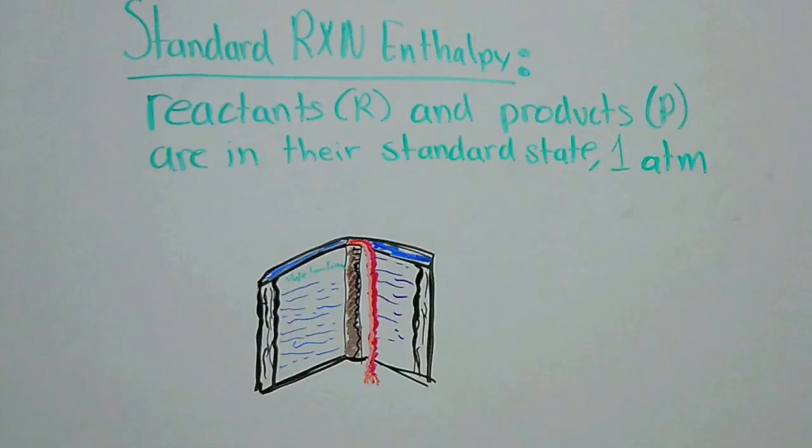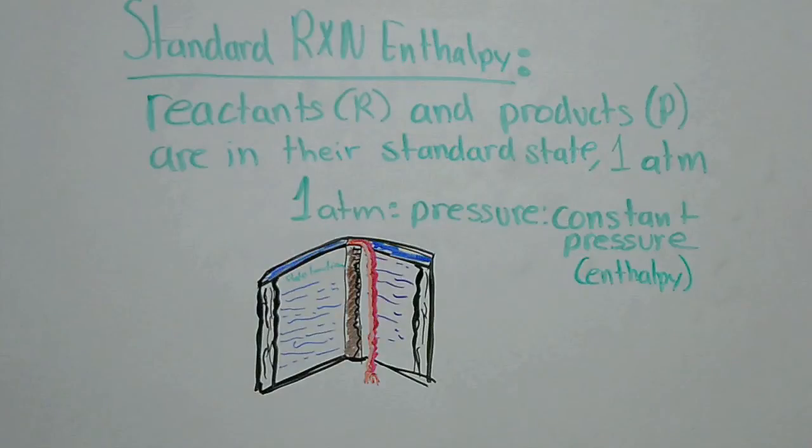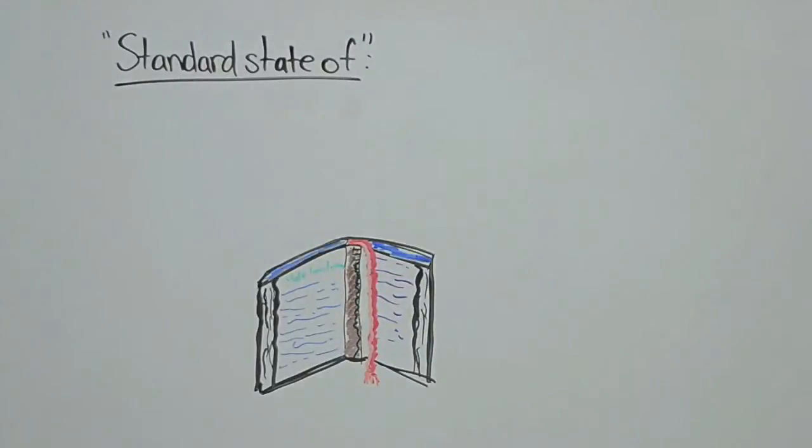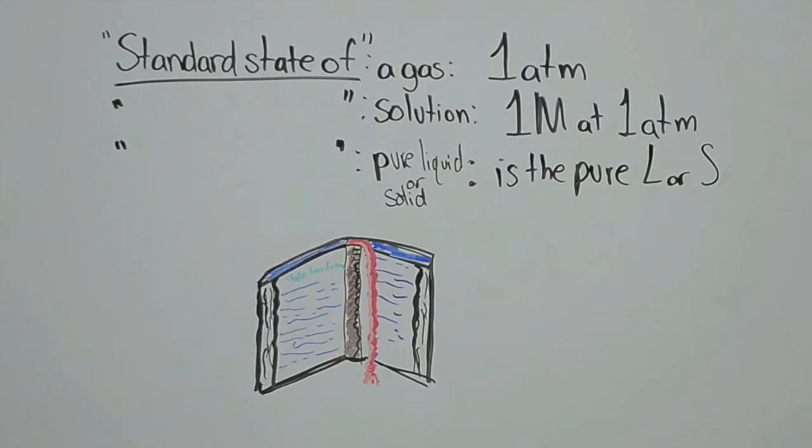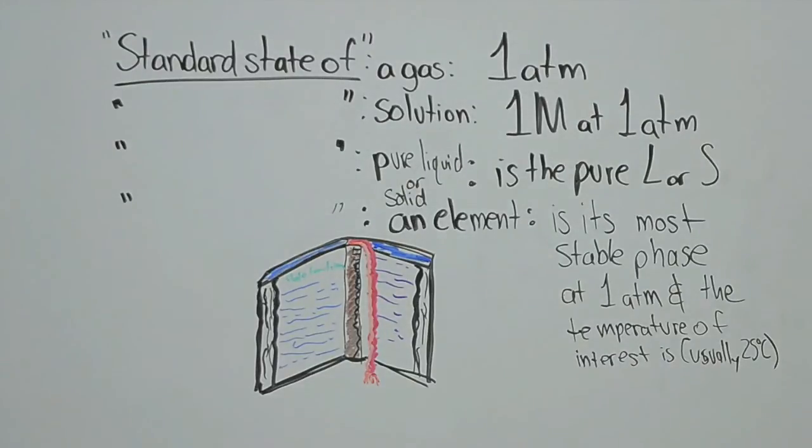Our third method is standard reaction enthalpy. This one is quite a doozy because all we need to have are reactants and products in their standard state and at a constant pressure of one atmosphere. Here is a breakdown for the following standard states. For a gas, it needs to be at one atmosphere. For a solution, the molecule needs to be at one molarity and one atmosphere. For a pure liquid or solid, it literally just needs to be a pure liquid and solid. No impurities allowed. For an element, it needs to be in its most stable phase at one atmosphere and at room temperature at 25 degrees Celsius.